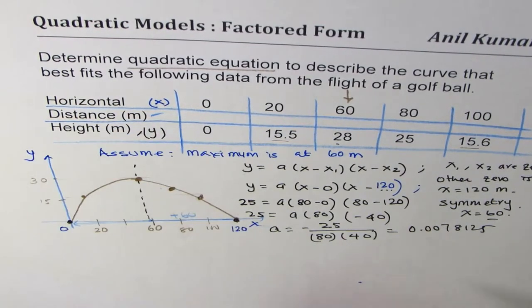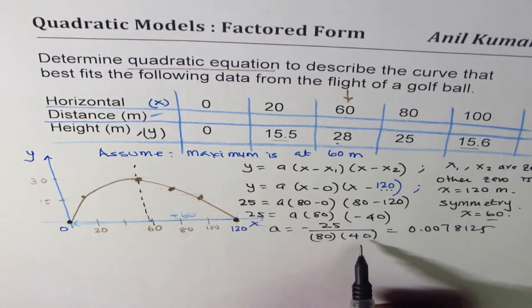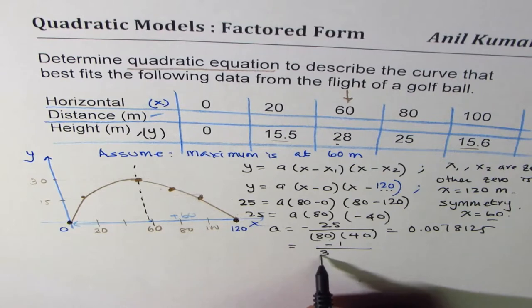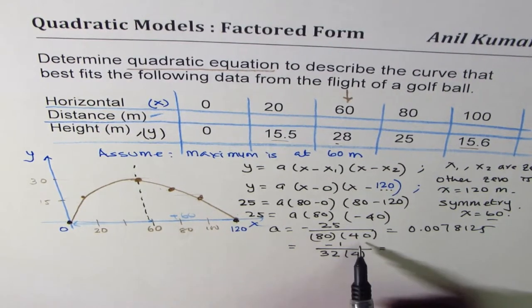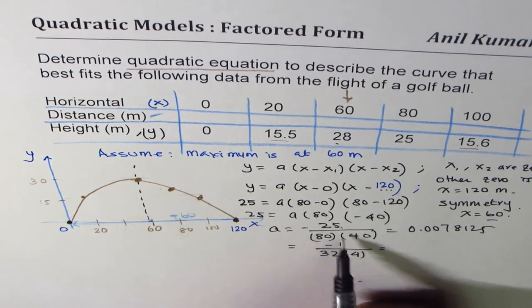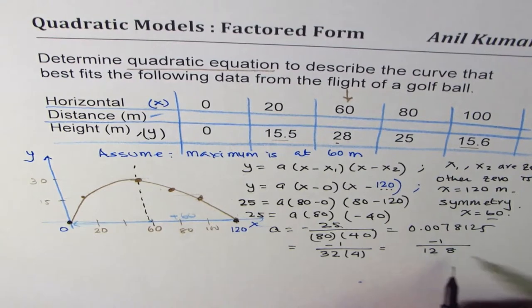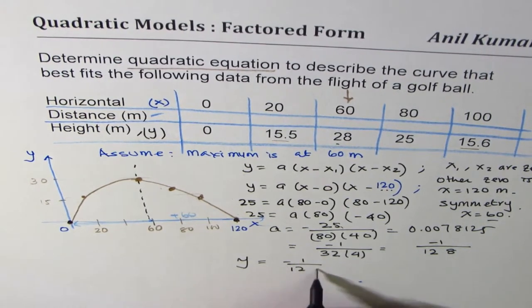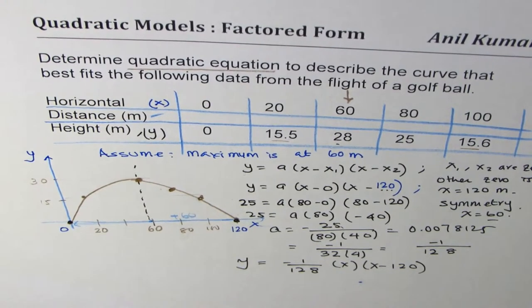Simplifying in fractions: 25 divided by 3200 reduces since 25 goes into 3200 — we get 3200 ÷ 25 = 128. So a = −1/128. This gives us the final equation: y = (−1/128) × x × (x − 120). That is the quadratic equation in factored form that models the given data.